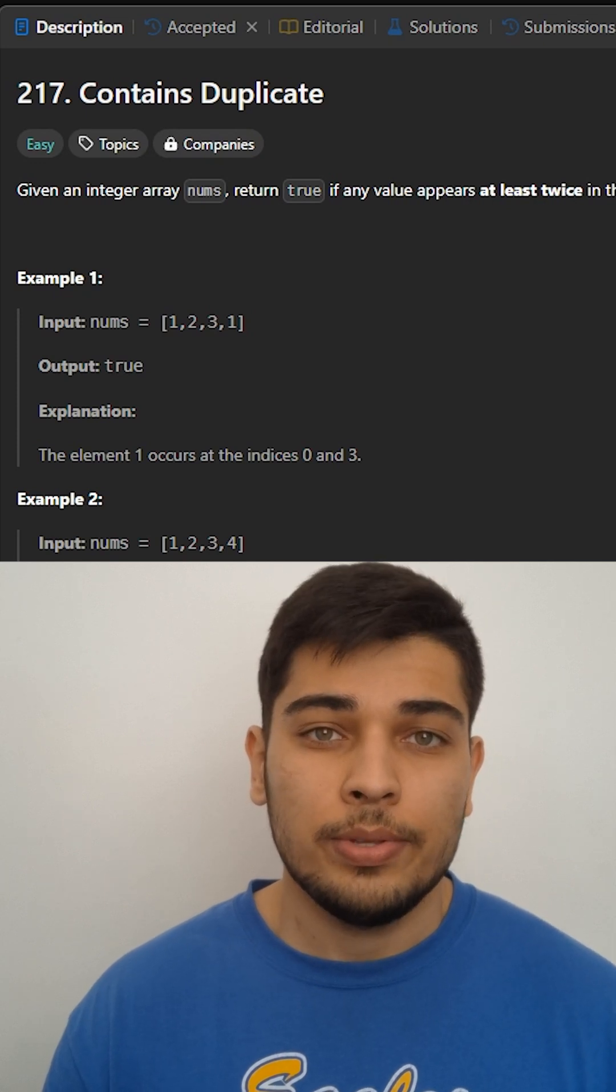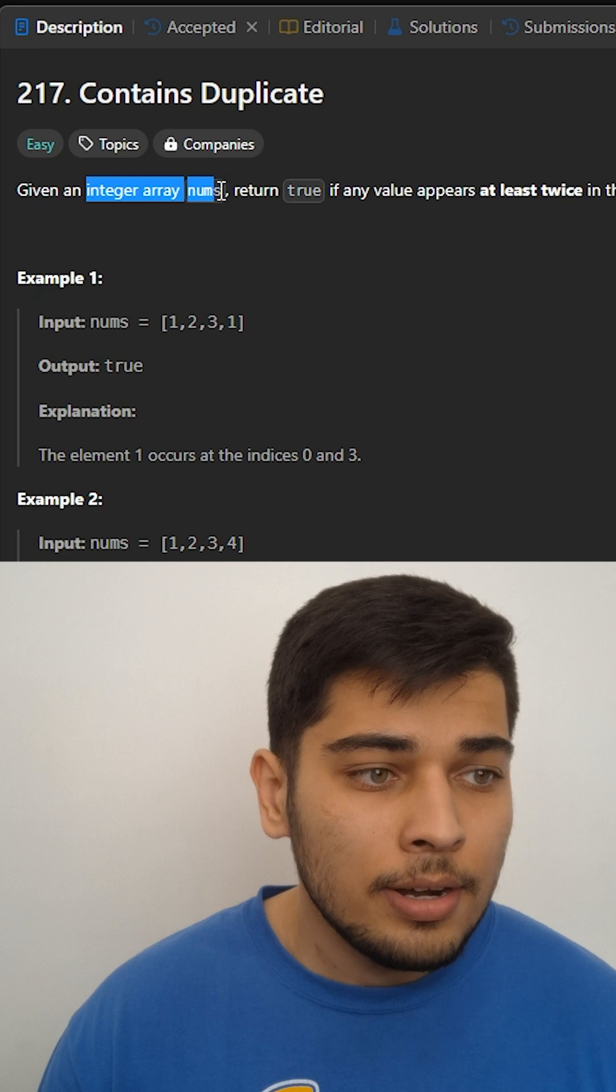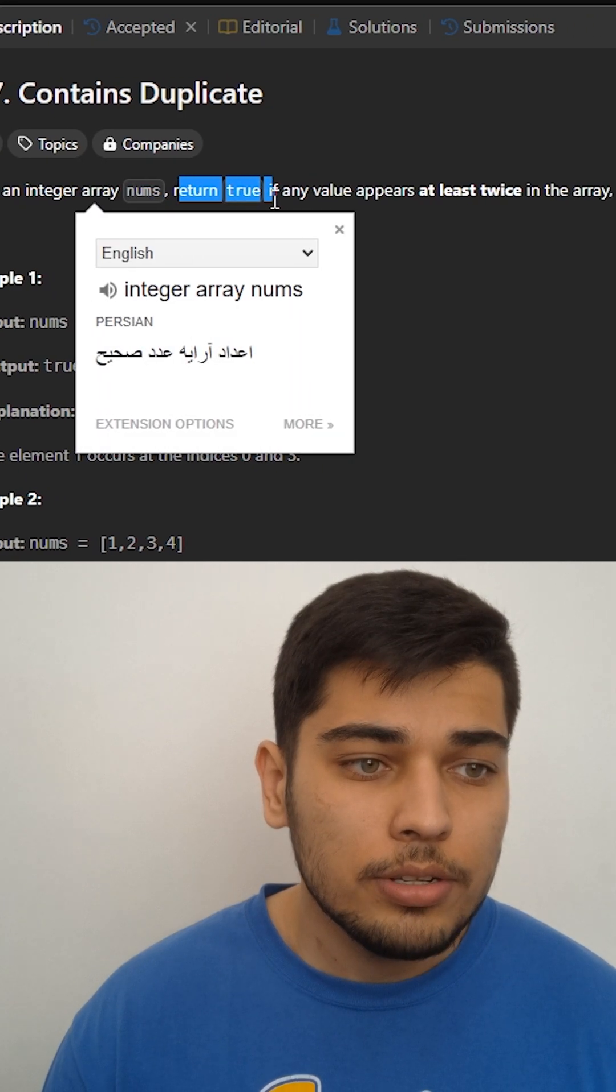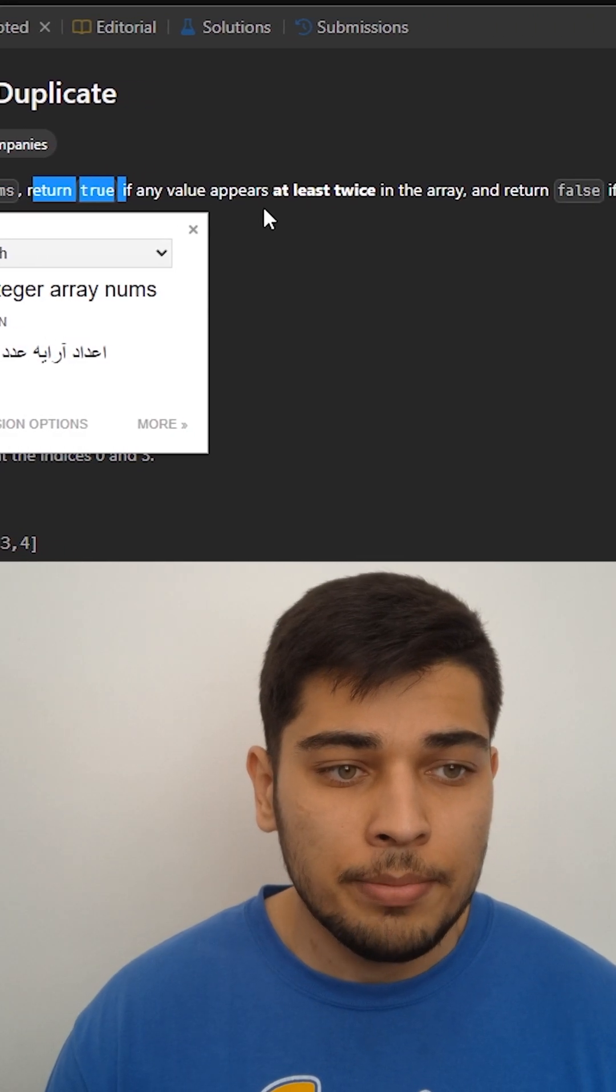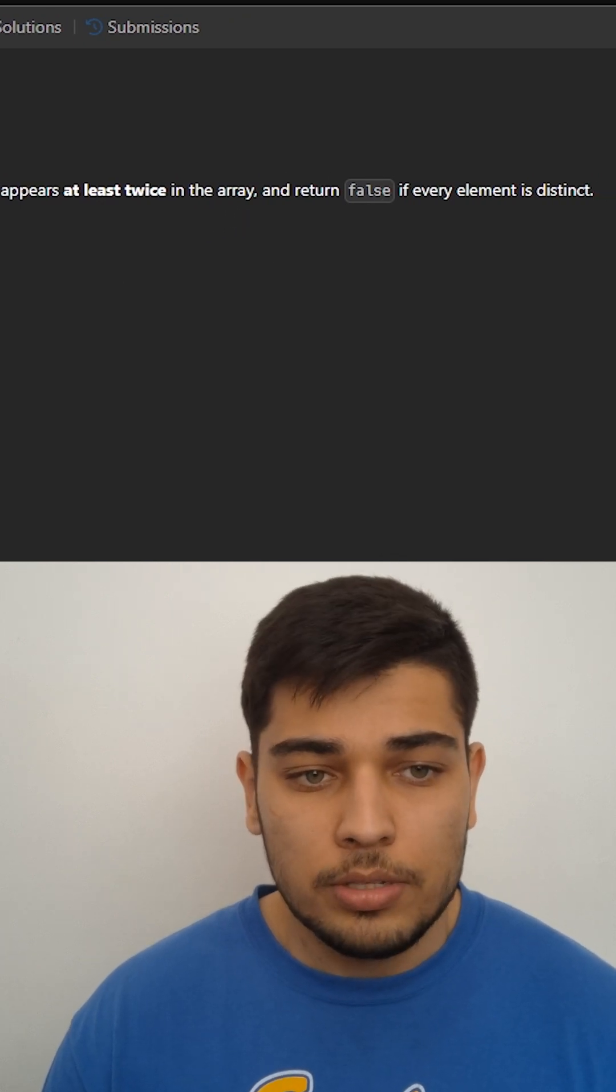Let's solve LeetCode question 217: Contains Duplicate. In this question we're given an array of integers and we should return true if any element appears more than once and return false if the elements only appear once.